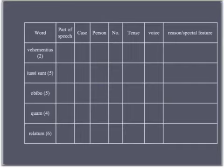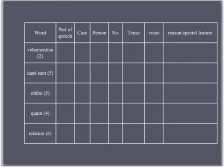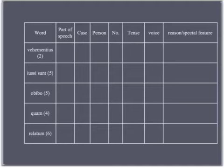Finally, probably the most difficult word is 'relatum,' found in line 10 of this passage. What part of speech is it? It is a participle — a verbal adjective. Its case is nominative. Participles don't have persons. Number: singular. Tense: perfect. Voice: passive. It is a perfect passive participle. The sentence means: 'his head, relatum — having been carried back to Antony — was fixed between the two hands on that rostrum from which he had attacked Antony so often with such eloquence.' Its reason or special feature is PPP — perfect passive participle — and it is nominative because it describes the subject, caput, the head.